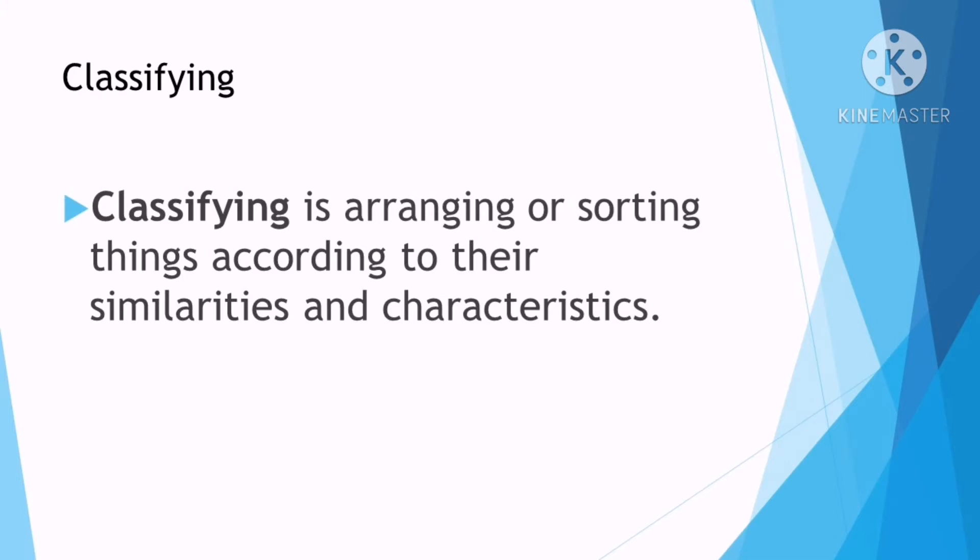What we did there was what we call classifying. When we say classifying, it is arranging or sorting things according to their similarities and characteristics. And when we also say classifying, it also falls under what we call as word analogy or analyzing things that are the same or that have similarities with each other, just like what we did.